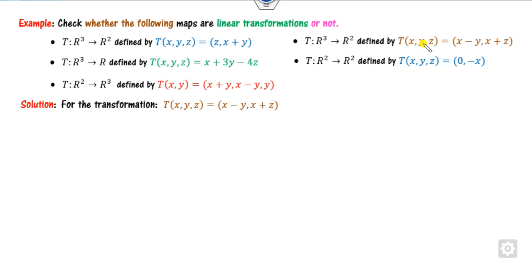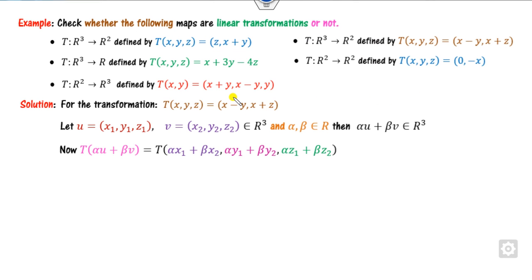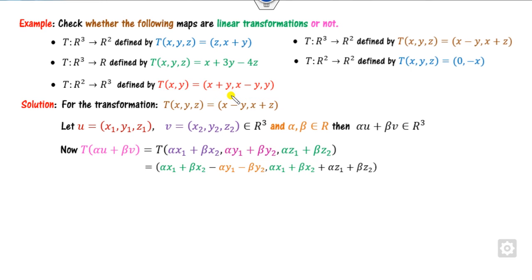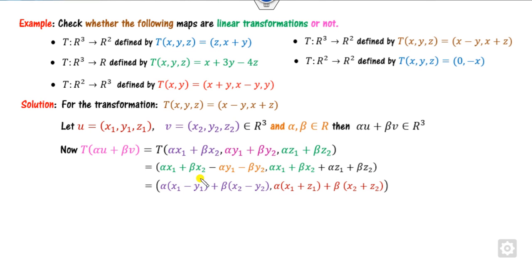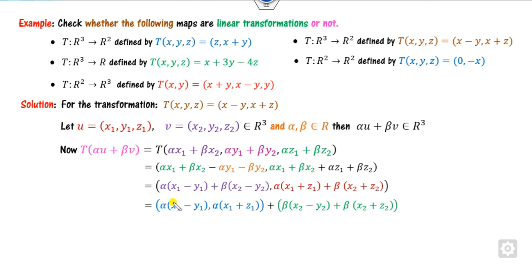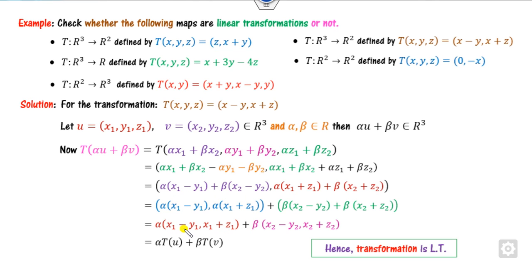For the second transformation, T of (0, 0, 0) is 0 — satisfied. Starting with alpha U plus beta V, with x, y, z, substituting gives x minus y and x plus z. Taking pairs and factoring alpha common from the first part and beta common from the second, this is T of U and T of V respectively. So this is satisfied. The remaining examples you can verify by yourself.